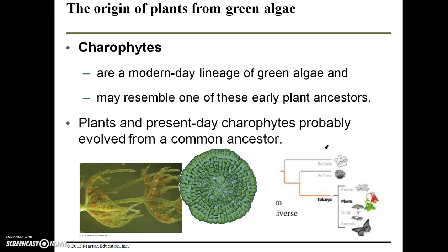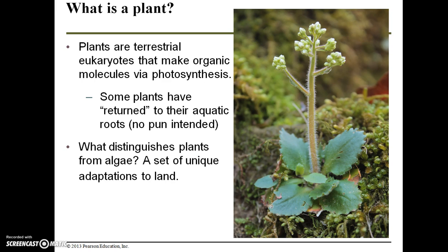Carophytes are a modern-day lineage of green algae and they may resemble one of these early plant ancestors. Plants and present-day carophytes probably evolved from a common ancestor. So what exactly is a plant? Plants are terrestrial eukaryotes that make organic molecules via photosynthesis — they are autotrophs and also producers. Some plants have returned to their aquatic roots, but keep in mind that plants themselves evolved for life on dry land. A set of unique adaptations to land is what really sets plants apart from their algal ancestors and modern-day algae.